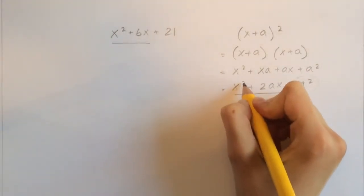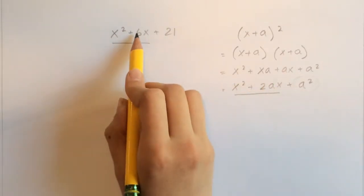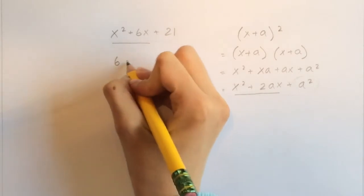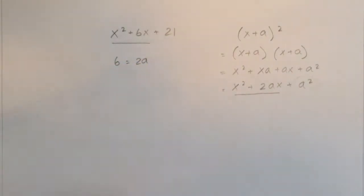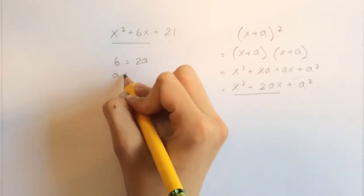We have an x² here, we have an x² here, and here we have a 2ax, and here we have a 6x. So we can say that 6 equals 2a, which means that a equals 3.